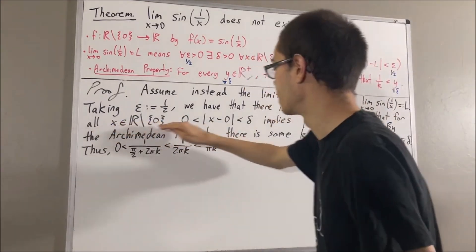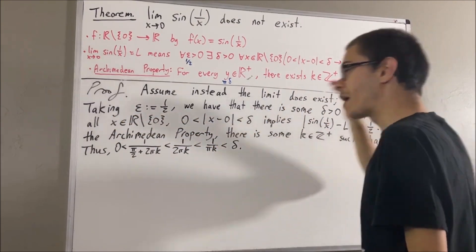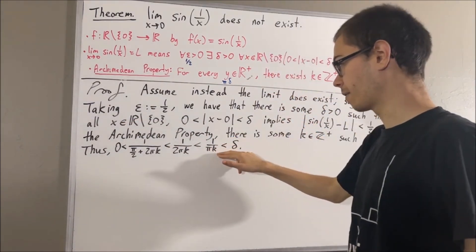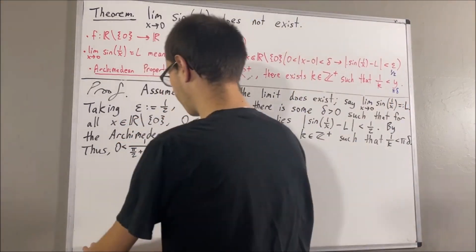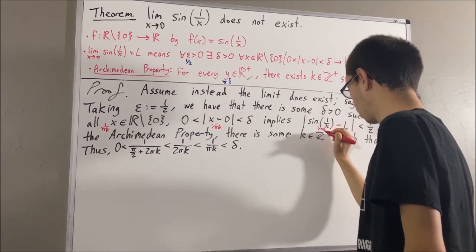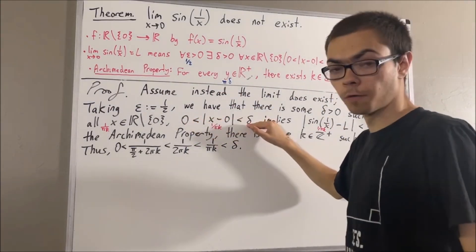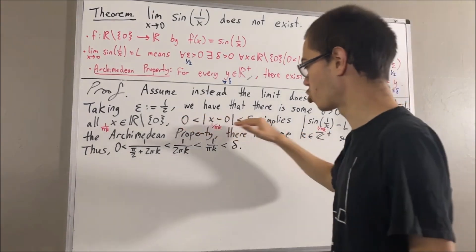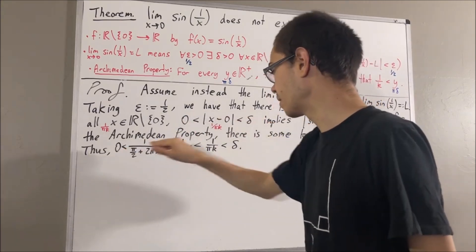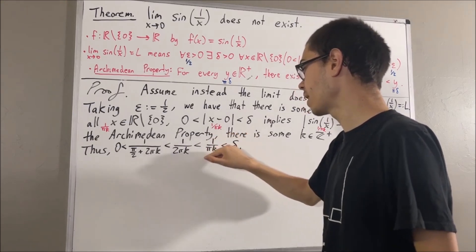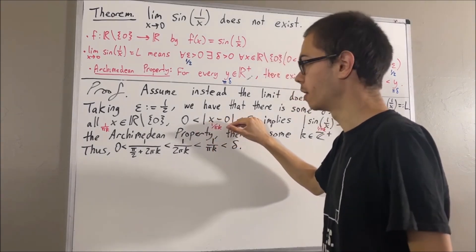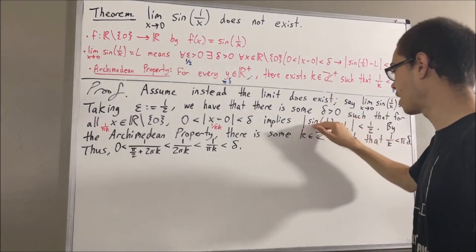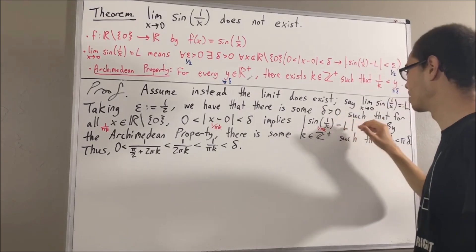This statement works for every non-zero real number, so in particular it must work for the non-zero real number 1 over pi k. Taking x to be 1 over pi k, if this is true for 1 over pi k then this is true for 1 over pi k. Since 0 is less than 1 over pi k is less than delta, and 1 over pi k equals this, this must be true. Therefore, we have that the absolute value of sine of 1 over (1 over pi k) minus L is less than one-half.